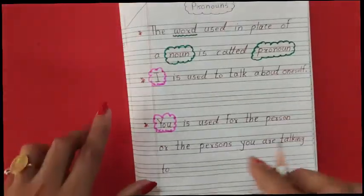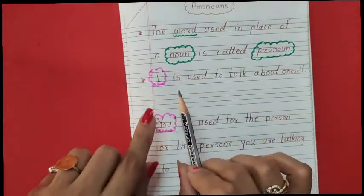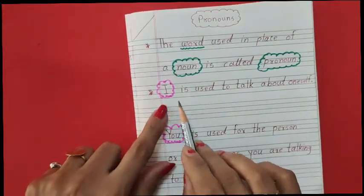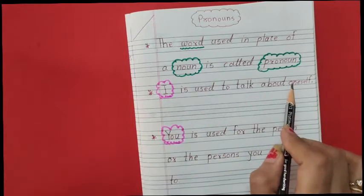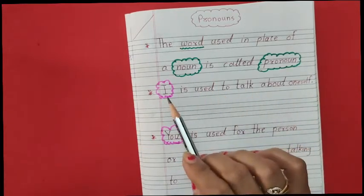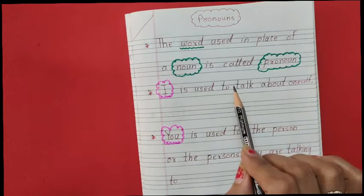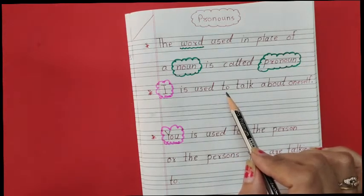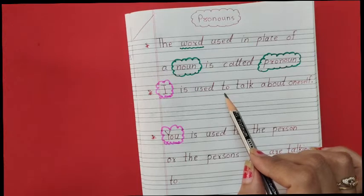Let me explain the definition of these one by one. I is used to talk about oneself. Let me give you some examples. I am a girl. I want to go to school. I want that book.